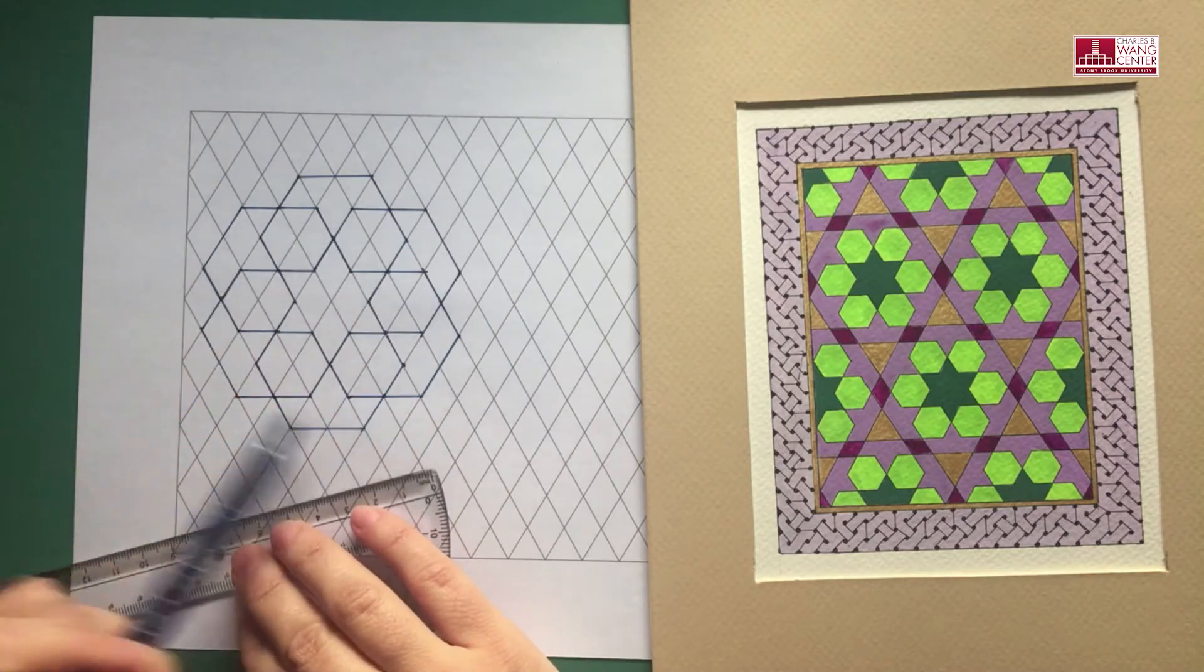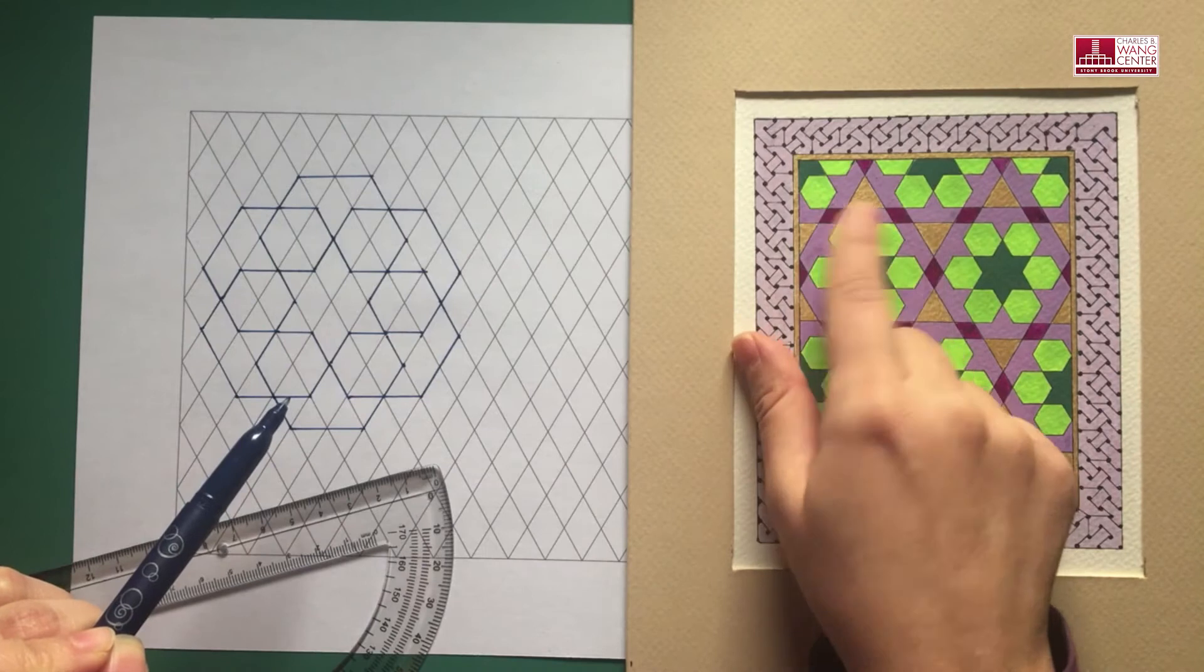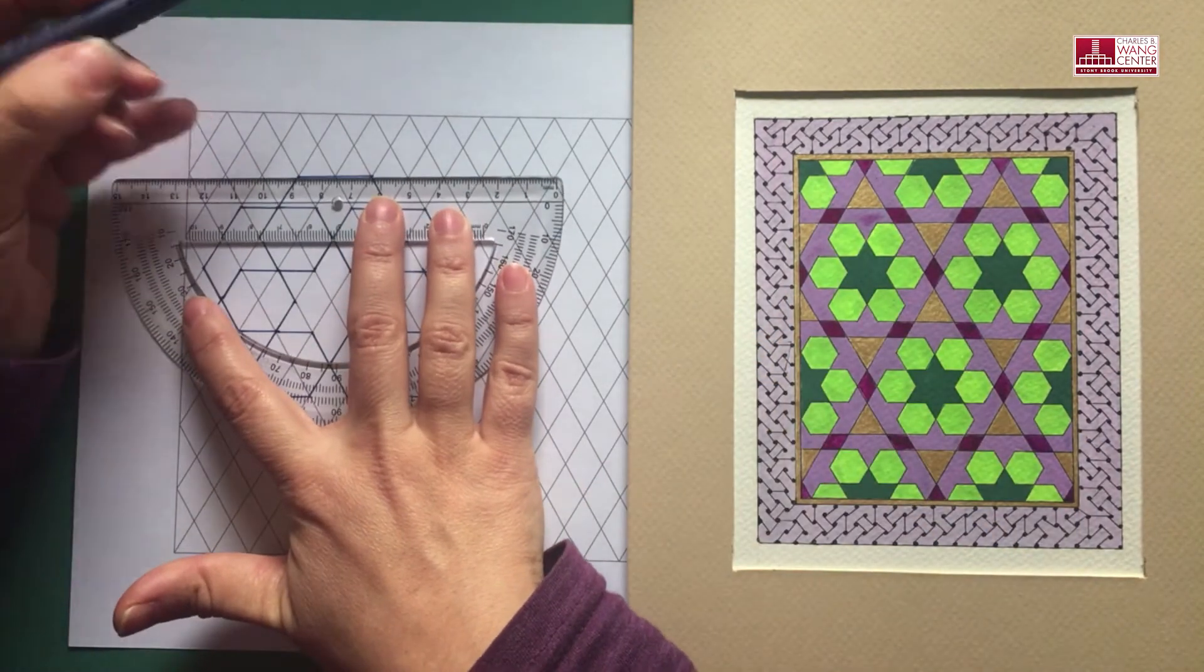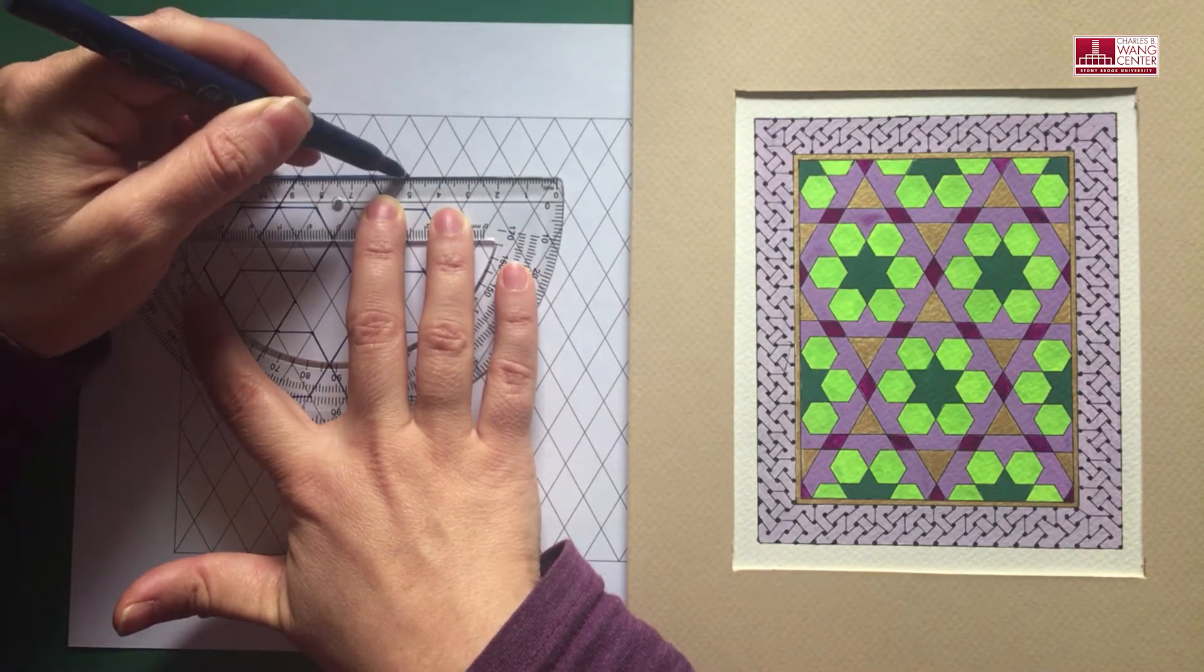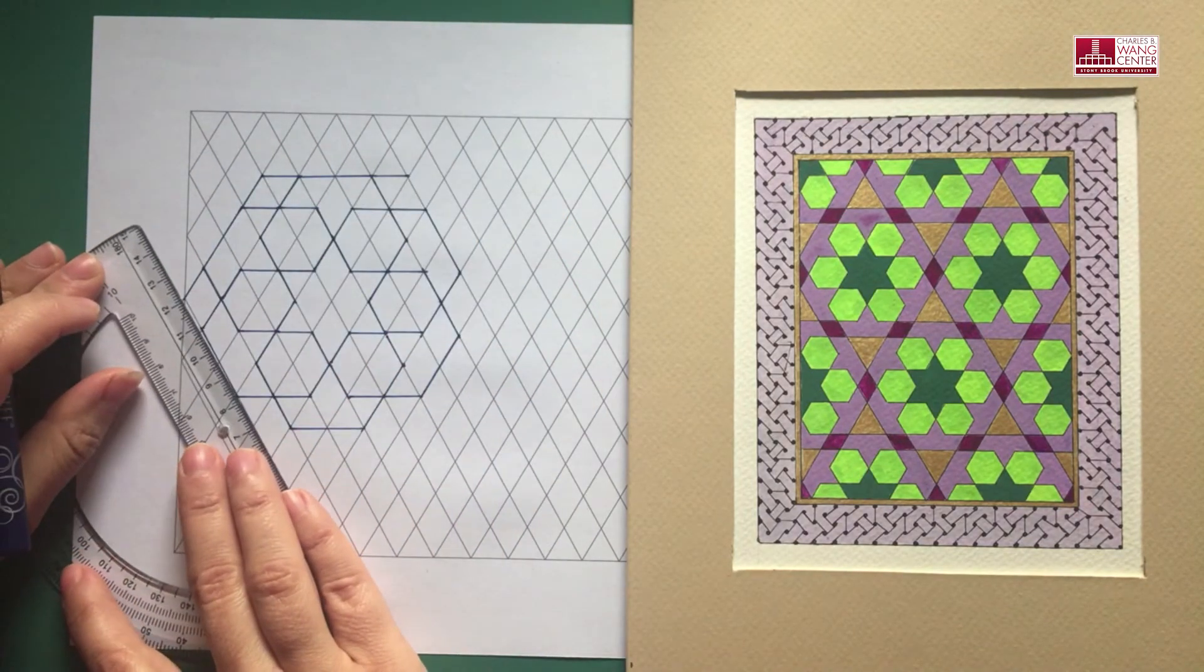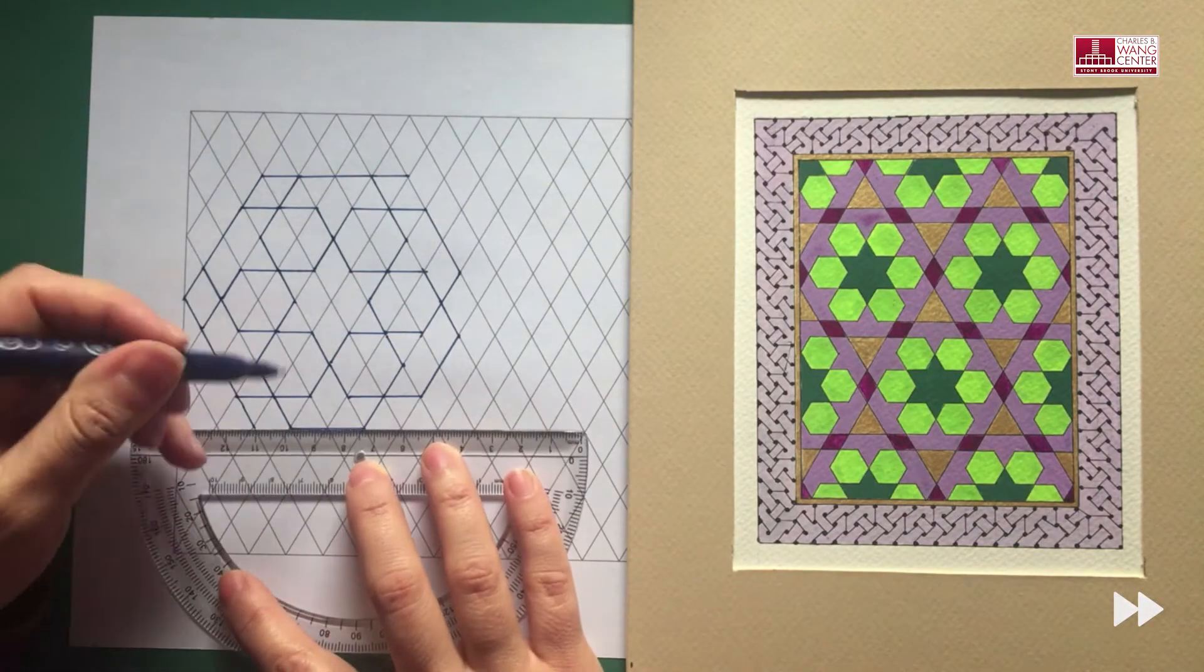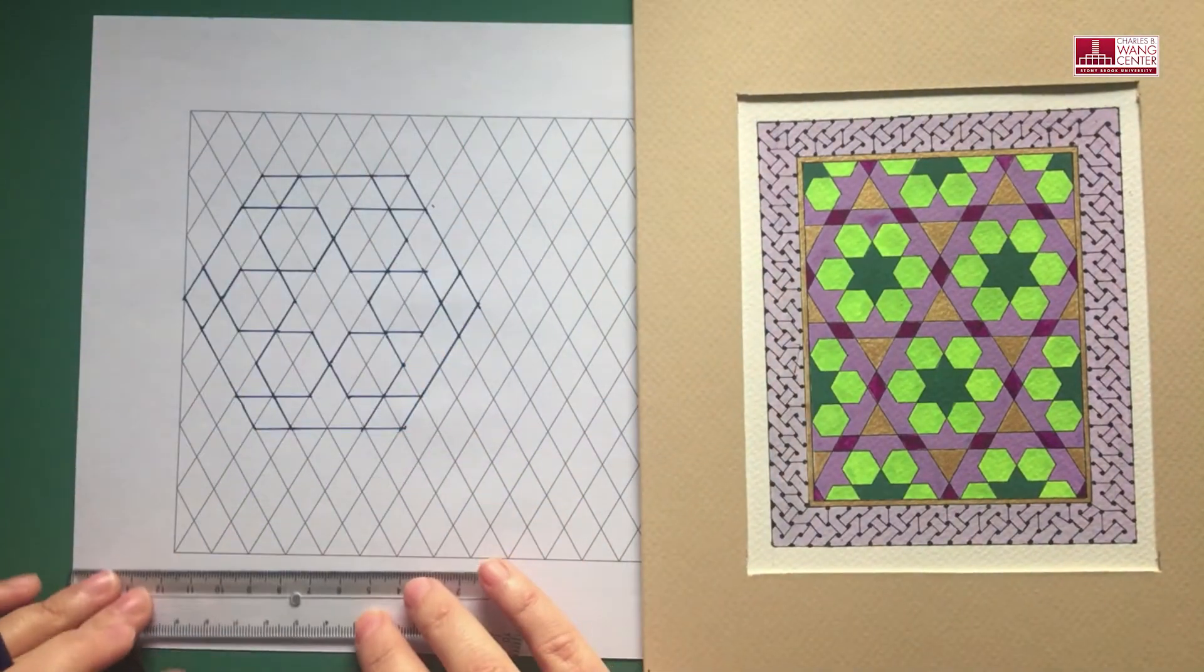You see here that we have six boat shapes and the only remaining part would be these rhombus at the corners, so just continue the lines of the kites from both sides. And you will end up having your rhombus.